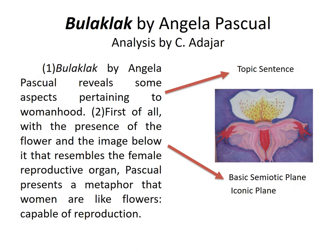Here is my sample paragraph. I start with the topic sentence: Bulaklak by Angela Pascual reveals some aspects pertaining to womanhood. First of all, with the presence of the flower and the image below it that resembles the female reproductive organ, Pascual presents a metaphor that women are like flowers, capable of reproduction. You will see in my second sentence it's a combination of basic semiotic and iconic plane — you look at the images, the colors; the image itself is also iconic play.